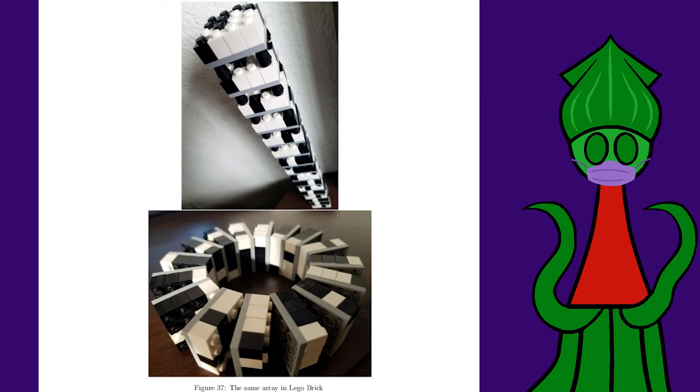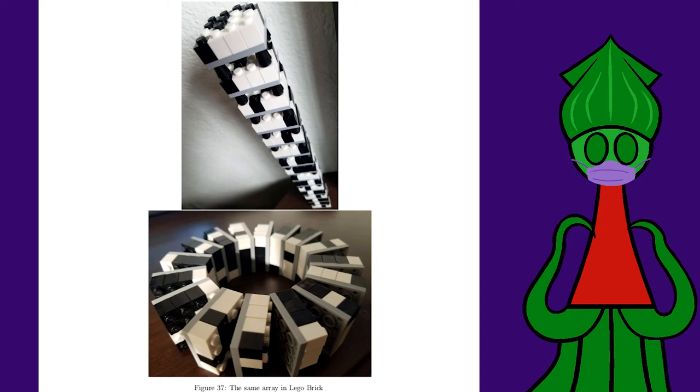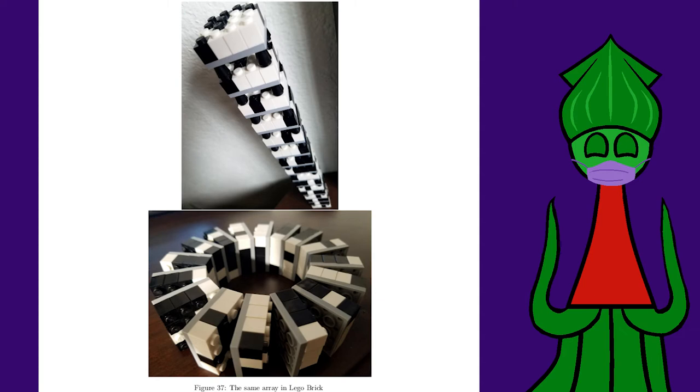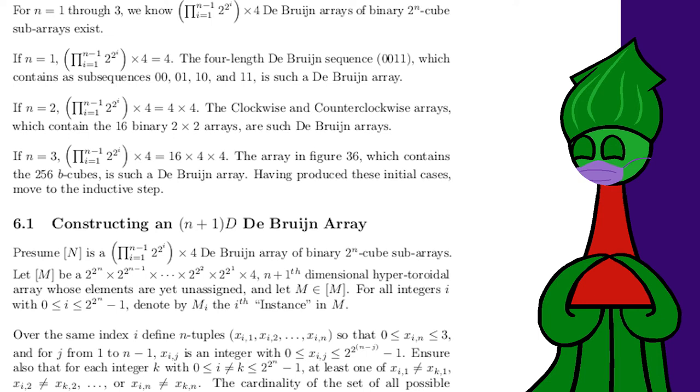In my bachelor's thesis, I prove there's no reason to stop there either. Now that we've got a four-dimensional donut with the Debron property, we can stick 256 of them together and connect them across the fifth dimension to make a five-dimensional donut with the Debron property. Then we can take 65,536 of those and make a six-dimensional donut with the Debron property, and so on. Every finite number of dimensions can have a Debron hypertorus.